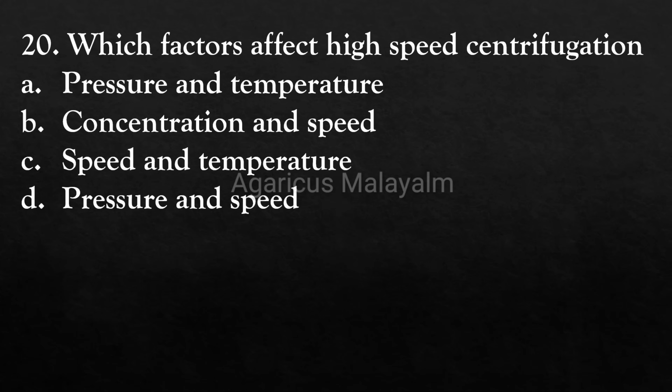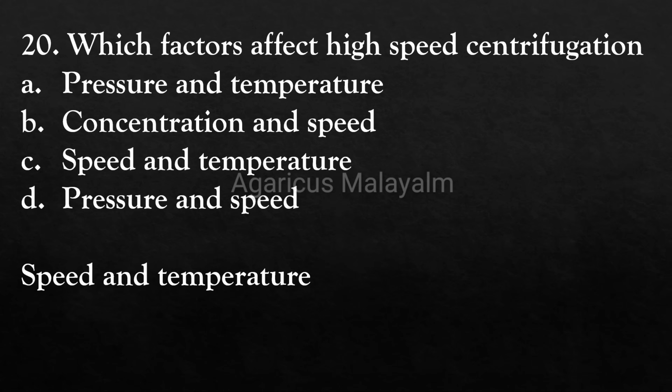Twentieth question: Which factors affect high-speed centrifugation? Answer options: Option A - pressure and temperature, Option B - concentration and speed, Option C - speed and temperature, Option D - pressure and speed. Correct answer: Option C - speed and temperature.